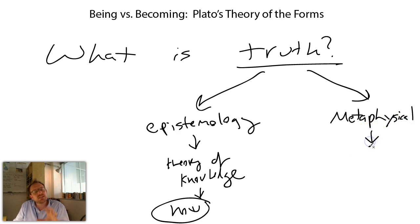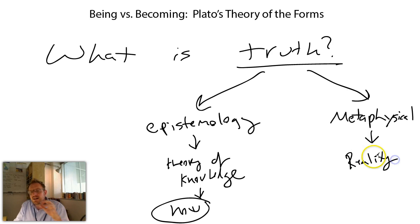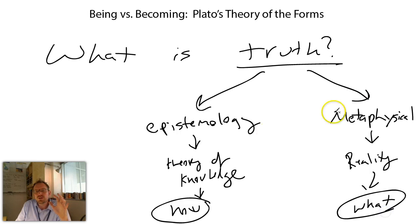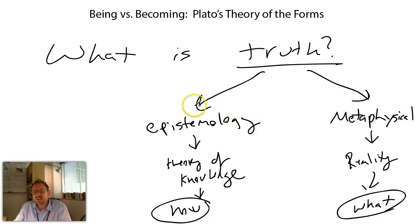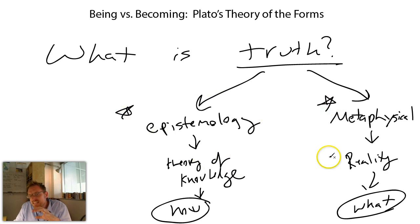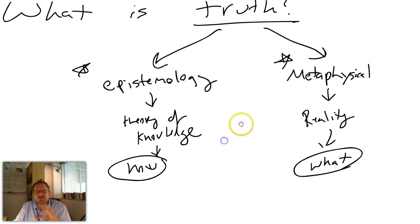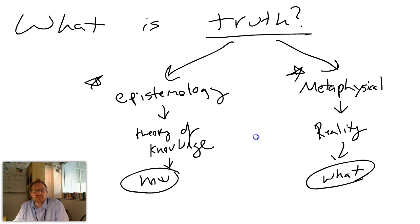Some philosophers might debate me here, but when I say metaphysical, I mean that when we say something is true, we're saying that something really does happen in the world — we reference something about reality. Metaphysics is the analysis of reality. So there are two sides: the 'what' part — what is actually the case in the world — and the 'how' part — how do we know it's true. We're going to see that Plato's theory of the forms ties all of this together in a very beautiful and brilliant way.